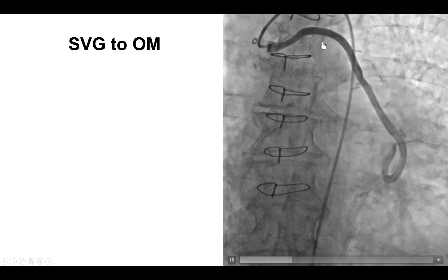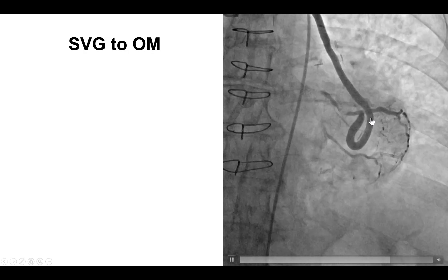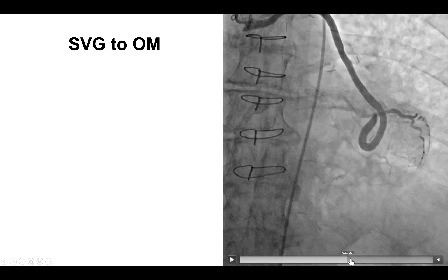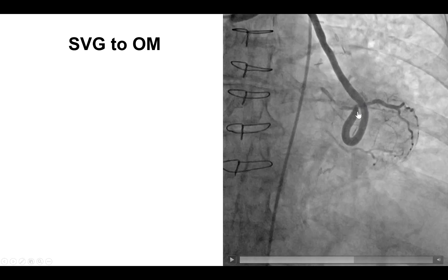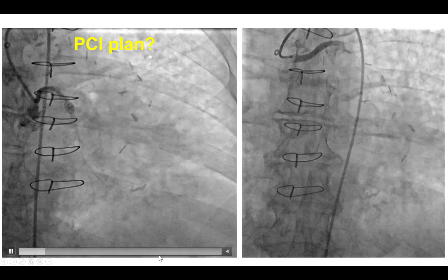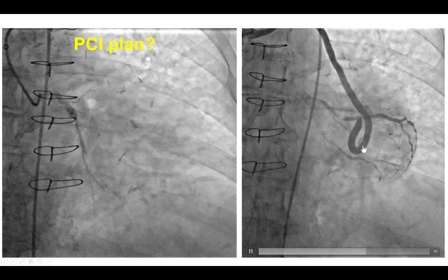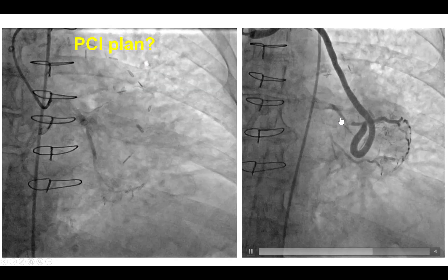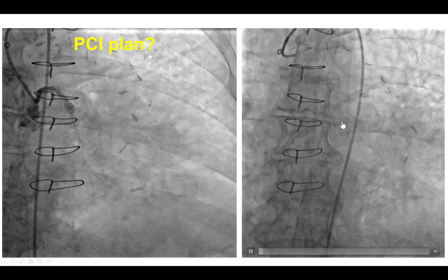The vein graft to the first obtuse marginal branch was actually patent; however, there was a significant lesion immediately proximal to the touchdown of the saphenous vein graft. So the patent saphenous vein graft was supplying OM1, with a severe lesion proximal to the touchdown, and the second OM getting intermittent flow both retrograde through the SVG and also antegrade. This appears to be the culprit lesion of the proximal part of the obtuse marginal branch.